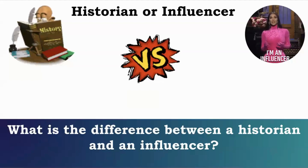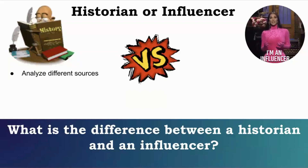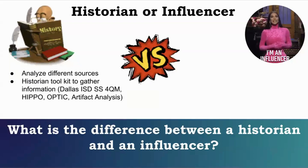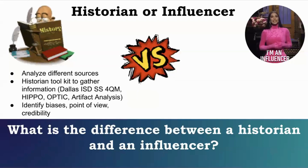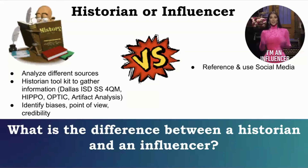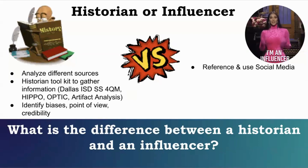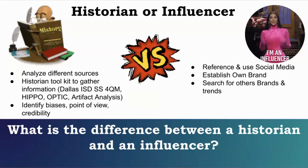I'm going to share some of the differences specific to Dallas ISD. Historians typically analyze different sources — and in Dallas ISD we have a historian toolkit which includes 4QM, HIPPO, OPTIC, and an artifact analysis sheet. Historians also identify biases, point of view, and credibility. Compared to an influencer, who typically references and uses social media, establishes their own brand, and searches for other brands and trends.